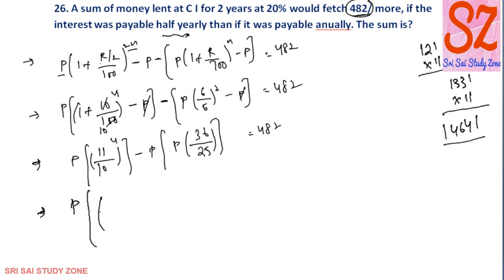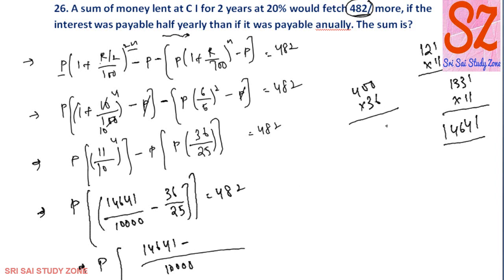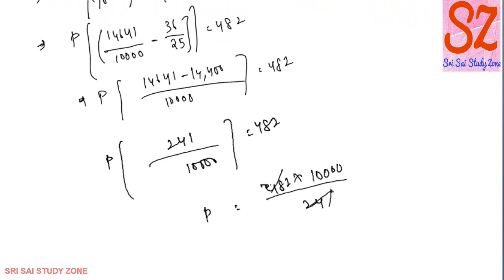So that value is 14641 by 10,000, minus 36 by 25 squared. That is equal to 482. So P is equal to, using 10,000, so 14641 by 10,000 minus 36 by 25, gives us P into that expression equal to 482. Then P is equal to 482 into 10,000 divided by 241, so two times, so the principal amount is equal to 20,000.